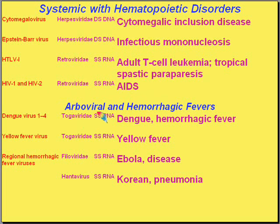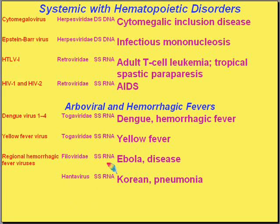Arboviruses are viruses generally brought to the human body by arthropods — that's why they're called arbo, arthropod-borne. They cause a wide variety of central nervous system infections and hemorrhagic fevers. Dengue has outbreaks every now and then. Yellow fever is a very serious virus. These are all potentially fatal viruses by virtue of causing hemorrhagic fevers. You may have heard of the horrific Ebola disease — these are all arthropod-borne viruses.